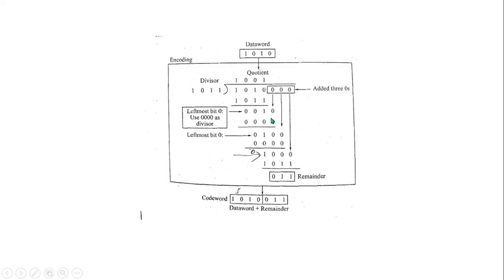Continuing the computation: the carry output is 1. Using the XOR truth table — 0 XOR 0 = 0, 0 XOR 1 = 1, 0 XOR 0 = 0 — we work through each term. In the quotient, zero gives us zero; we carry on. First term, second term, third term are processed accordingly.